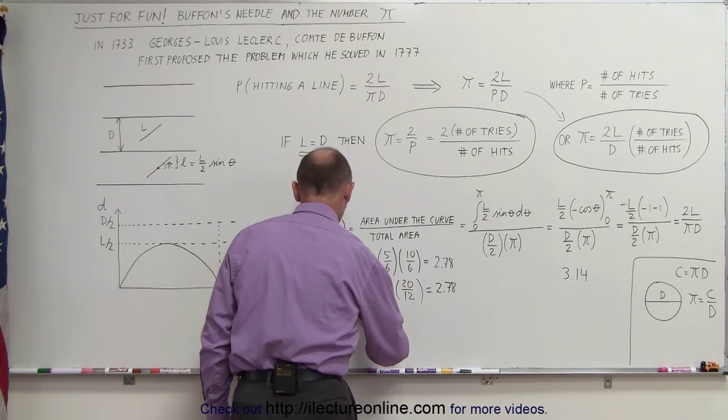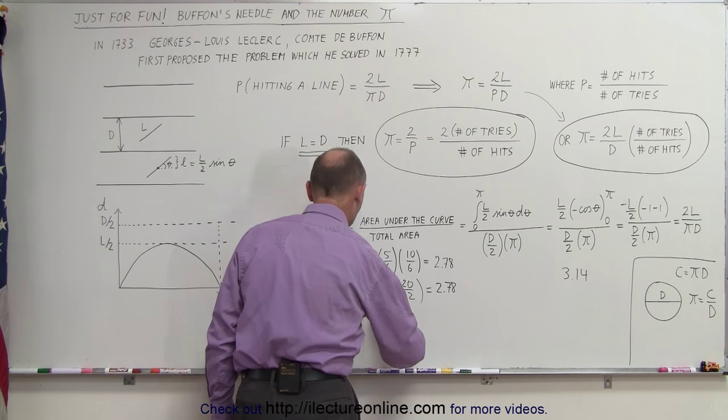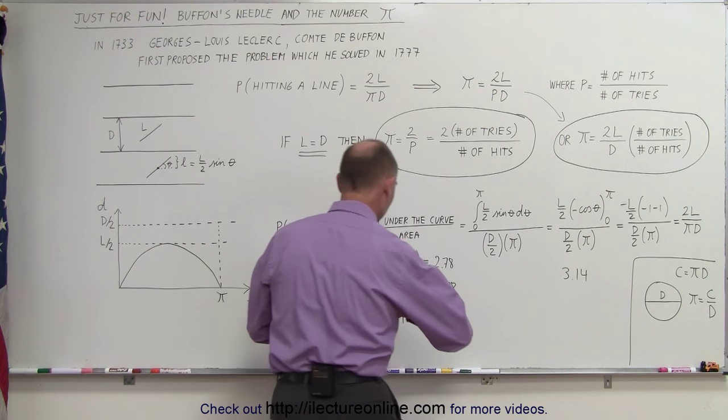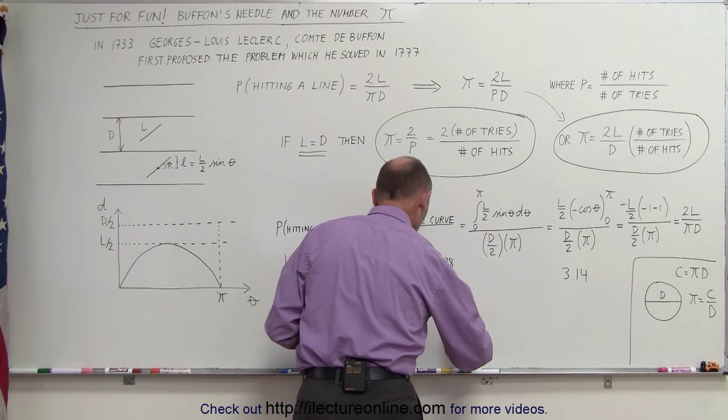What do we get for the third trial? Here with 30 needles, pi is equal to 2 times the ratio. We get 2.94. Well, that's a little closer to the actual number.